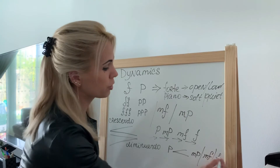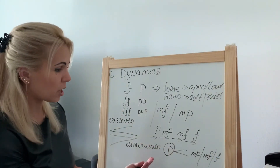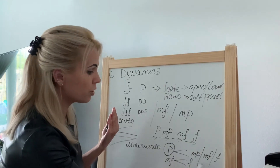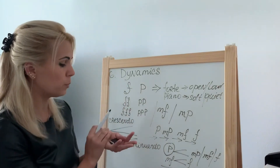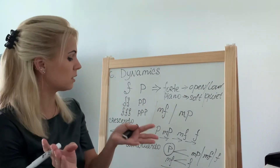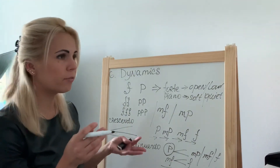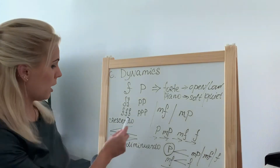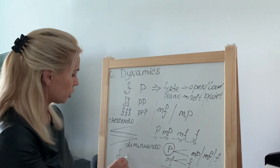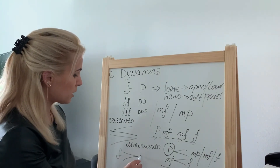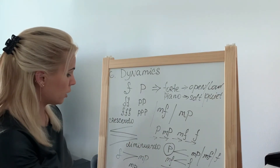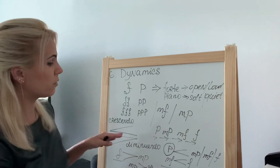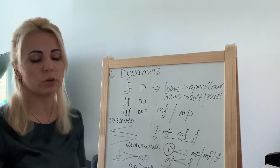You can also start from mezzo forte and crescendo toward forte. The same applies to diminuendo — you cannot write it at the beginning without a starting point. For example, you can start at forte and use diminuendo toward mezzo piano, or start at mezzo piano and diminuendo toward piano. The key difference between mezzo forte/mezzo piano and crescendo/diminuendo is that crescendo and diminuendo always require a starting dynamic.